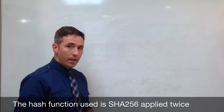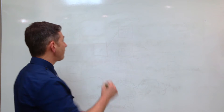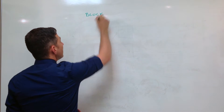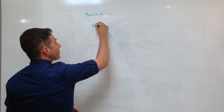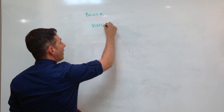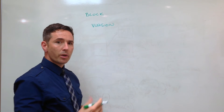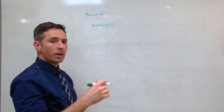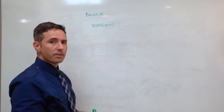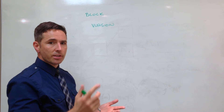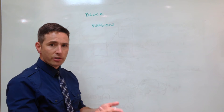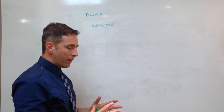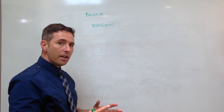So what does a block actually contain? A block contains several things - not too many. First of all, it contains a version number of the block - what is the code that you're using to represent this version, just like any other software release: version one, version two, version three.